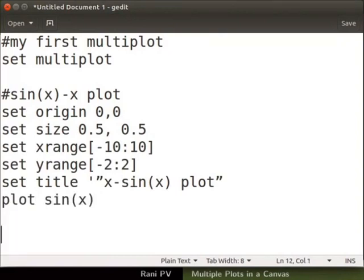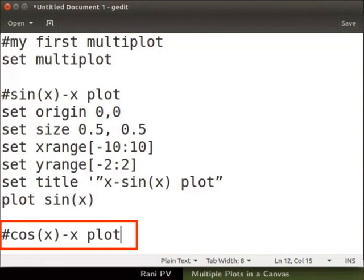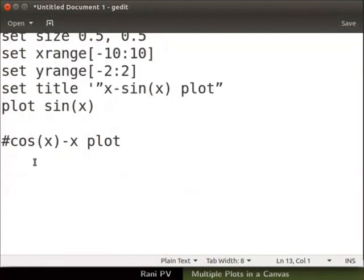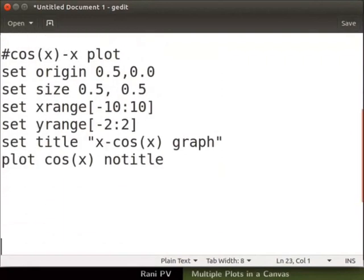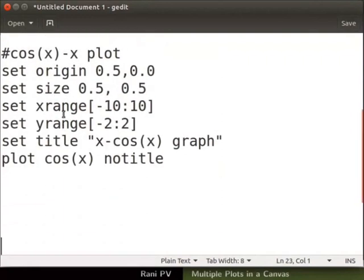I will enter the details for the second plot which is cosx. First write a comment line to indicate it is the part for cosx in the script. Type hash cosx plot. Enter the commands as shown here. Pause the video as and when necessary. Here I specify the position and size of the second plot. The position is set to the right side of the sinx plot.